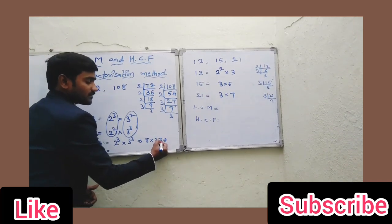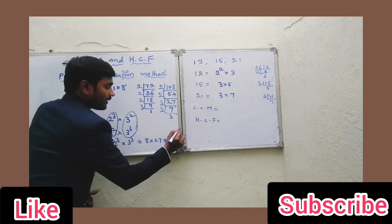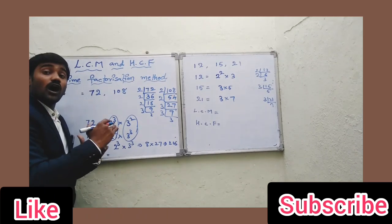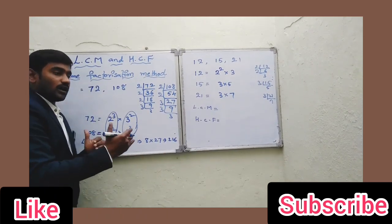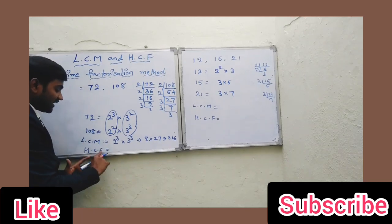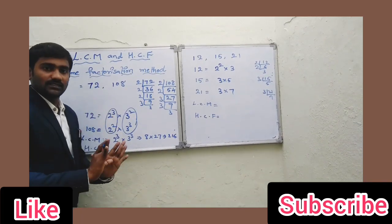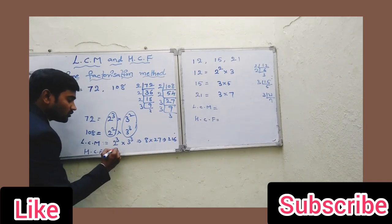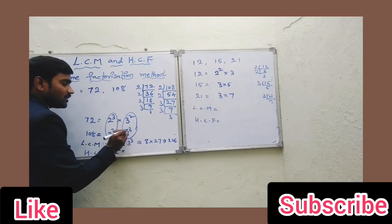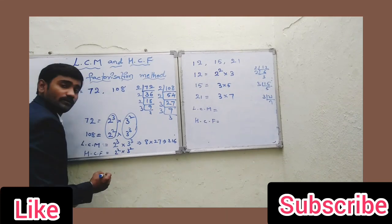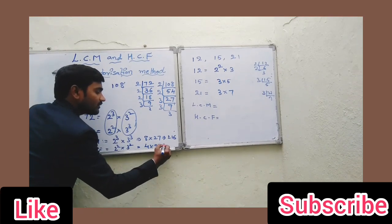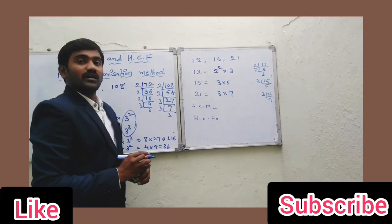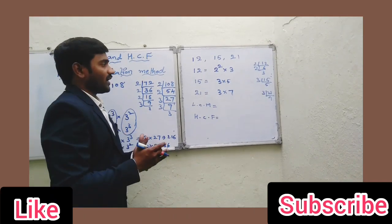For HCF, we take the lowest power of only the common factors. Between 2³ and 2², the lowest is 2². Between 3³ and 3², the lowest is 3². So HCF = 2² × 3² = 4 × 9 = 36. In the same way we can find LCM and HCF using highest and lowest powers.